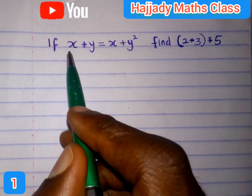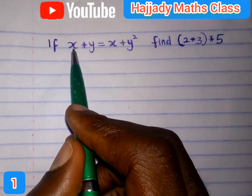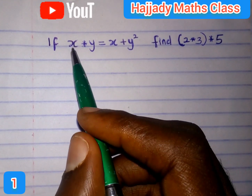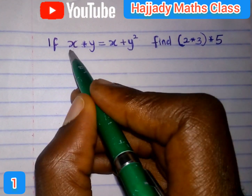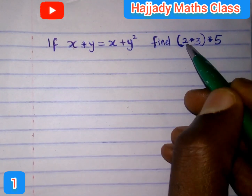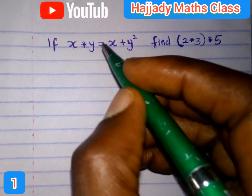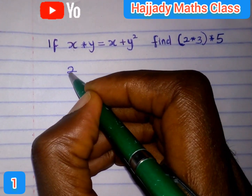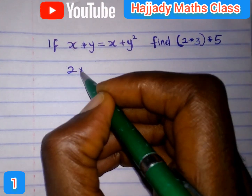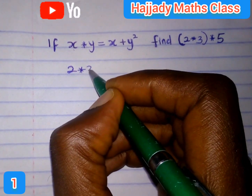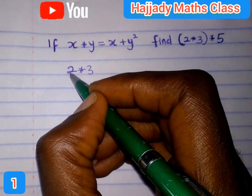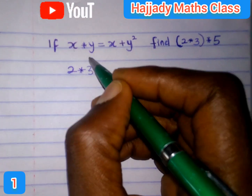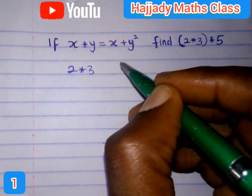What we just have to do here is to compare the values. So, in this case, x★y will be replaced with 2★3. So, that is, we have 2 operation 3. So, 2 is going to take the place of x, and 3 is going to take the place of y.